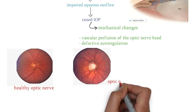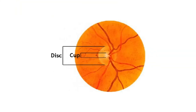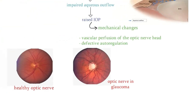The optic cup is the white area in the center of the optic disc, which is normally quite small in comparison with the entire optic disc. In people with glaucoma, because of increased pressure in the eye or loss of blood flow to the optic nerve, the nerve fibers begin to die. This causes the cup to become larger in comparison to the optic disc — you can note this difference in the images.